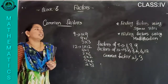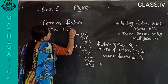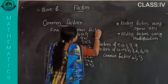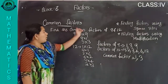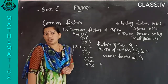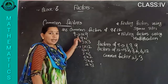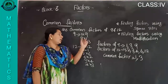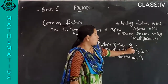Write down: find the common factors of nine and twelve. Before finding common factors, we first want to find all factors of nine and twelve. For nine: one into nine, nine into one, three into three. So factors of nine are one, three, nine.